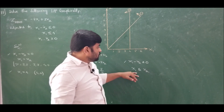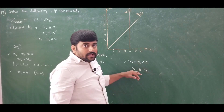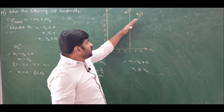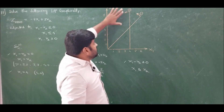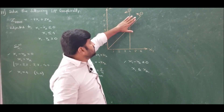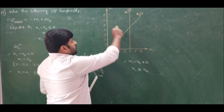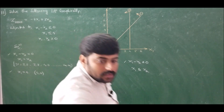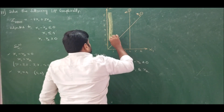The constraint states x1 ≤ x2, meaning x2 must be equal to or greater than x1. On the 45-degree line, x2 = x1. Above this line, x2 is always greater than x1. Hence, the feasible region for constraint 1 is above the 45-degree line. If you observe carefully, the solution space is not bounded.